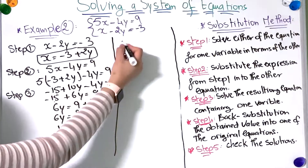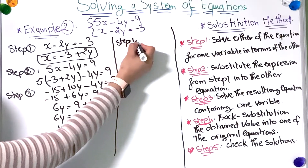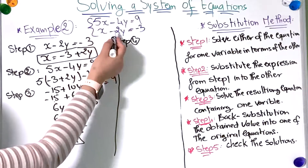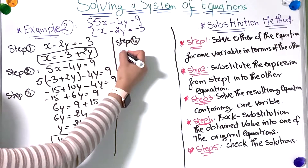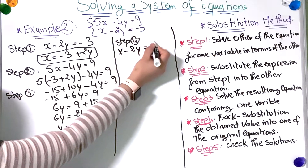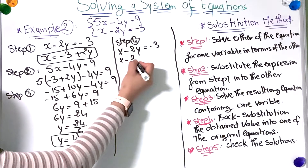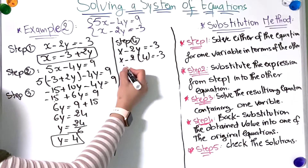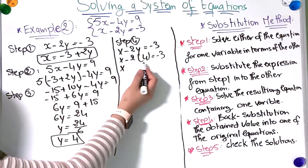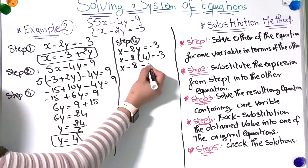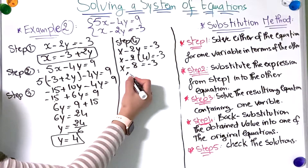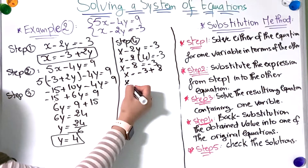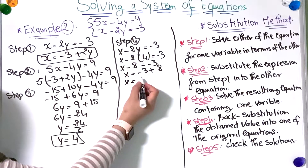Now I'm going to move to the fourth step. I'll take the solution I found and plug it into one of the equations to find x. Taking the second equation, x minus 2y equals minus 3, with y equal to 4: x minus 2 times 4 equals x minus 8 equals minus 3. Adding 8 to both sides, x equals minus 3 plus 8, so x equals 5.